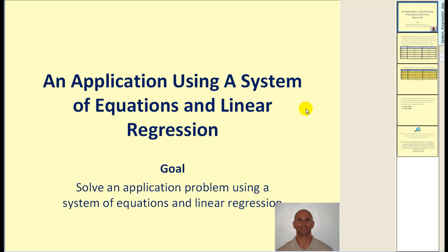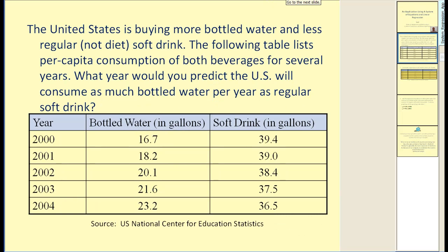In this video, we'll take a look at an application using a system of equations, but we'll first obtain the system of equations by performing linear regression. The United States is buying more bottled water and less regular soft drink. The following table lists the per capita consumption of both beverages for several years. What year would you predict the U.S. will consume as much bottled water per year as regular soft drink? As you can see, the gallons of bottled water purchased is increasing, while the gallons of regular soft drink is decreasing.